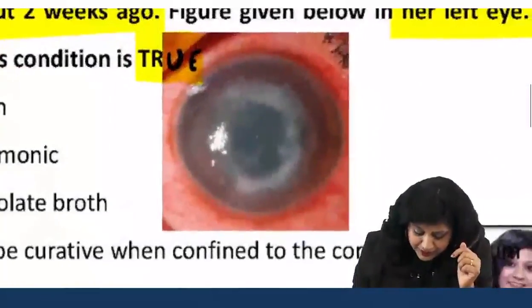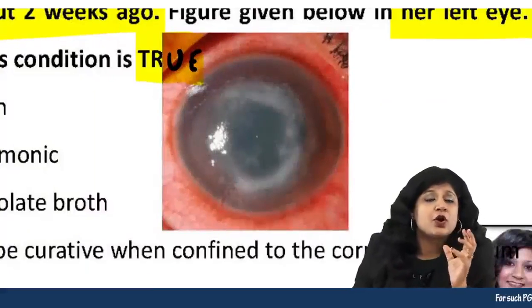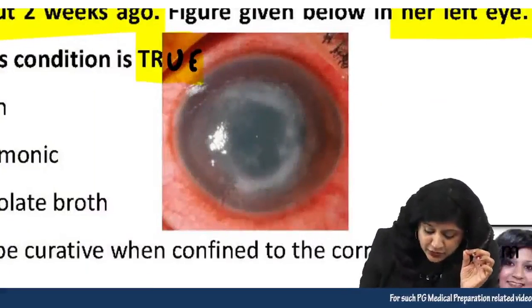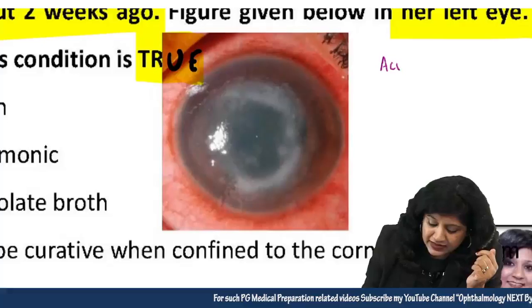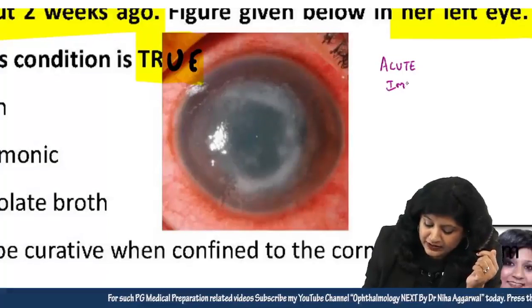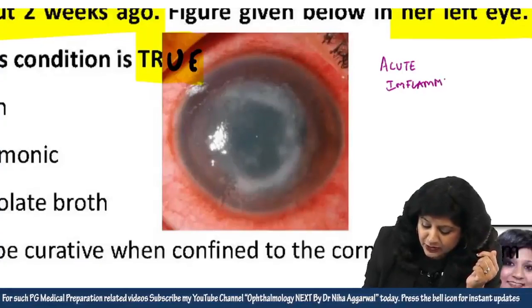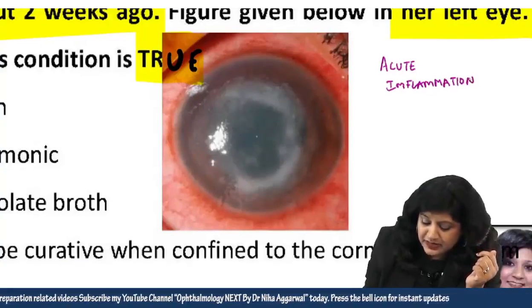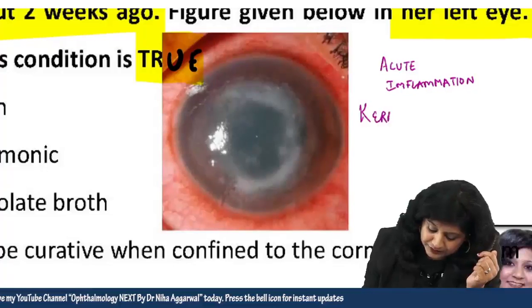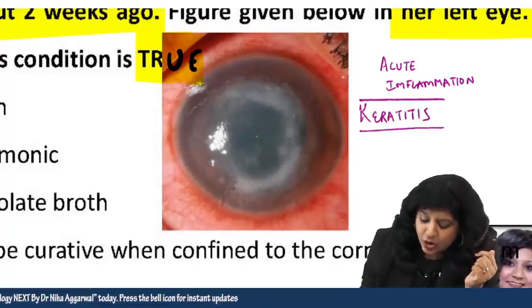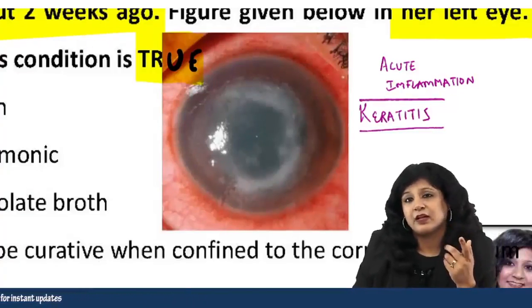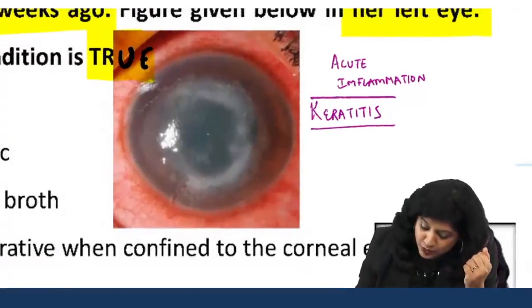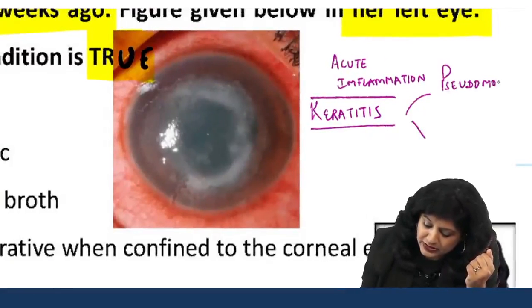Looking at the picture, what we have from the question is something very acute with signs of inflammation — acute inflammation after contact lens wearing. So we are thinking about keratitis, or a corneal ulcer. After contact lens use, what type of keratitis are we suspecting? The most common infection is by Pseudomonas, so we can think about Pseudomonas keratitis.